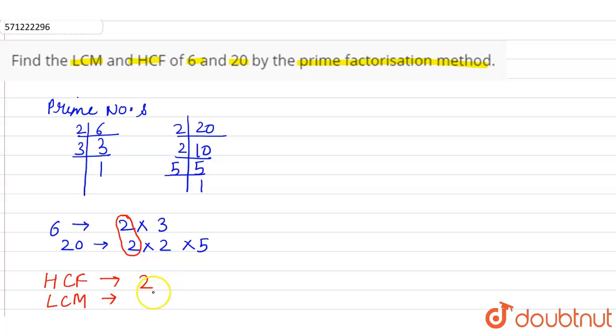LCM is to multiply the common and uncommon prime factors. So common prime factors are 2 and uncommon are the remaining prime factors, so 3 into 2 into 5.